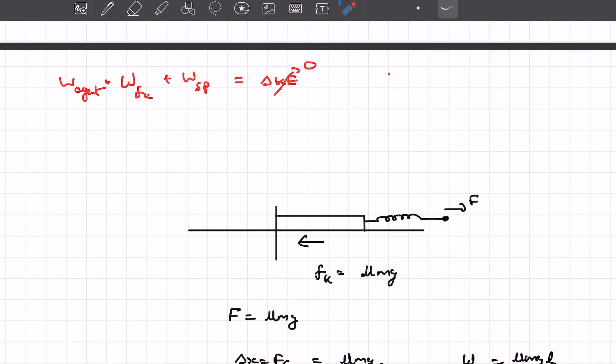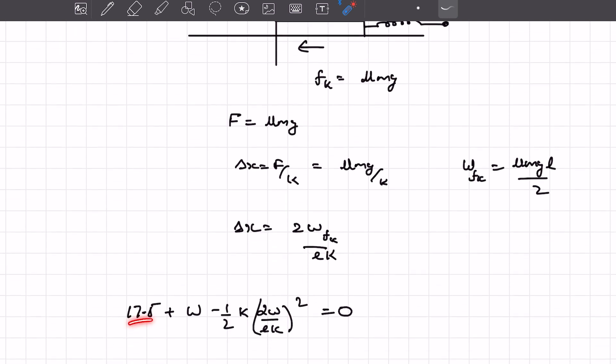And we have to determine the work done by friction. Now all we have to do is just substitute in the work energy theorem. It's given that the work done by the agent is 17.5 joules. And let's assume the work done by friction to be W.